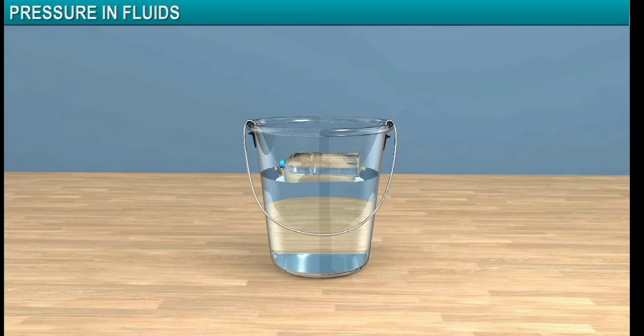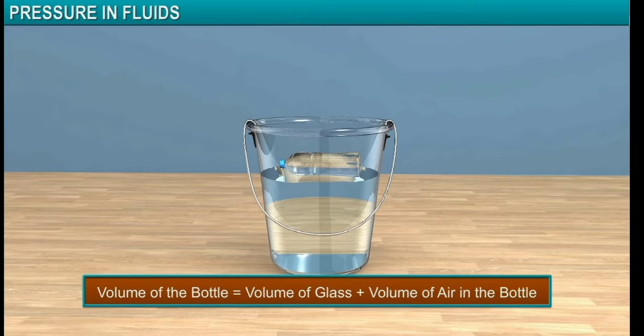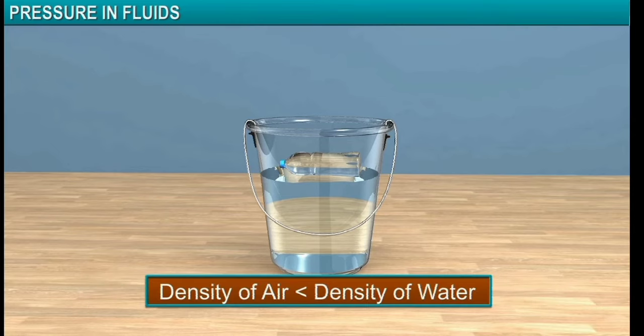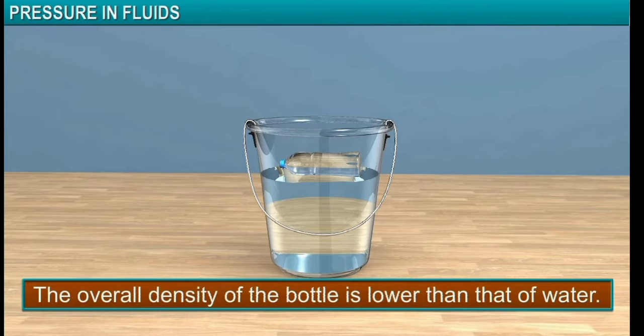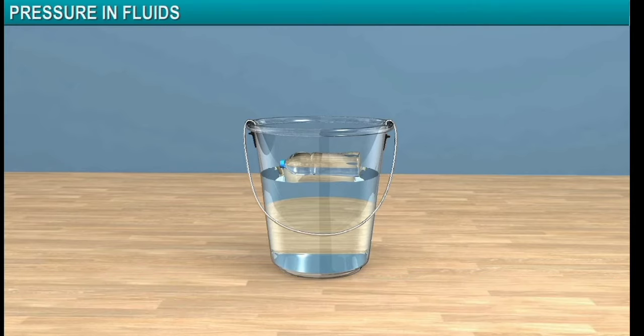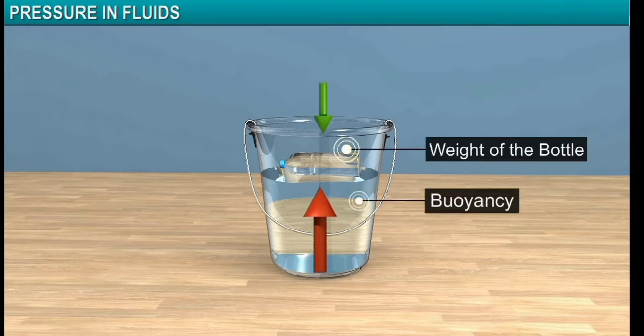Here's the reason why. The bottle contains air inside it. The volume of the bottle includes the volume of air in it. The density of air is much less than that of water. This means that the overall density of the bottle becomes lower than that of water. Hence, the upthrust on the bottle is greater than the weight of the bottle.